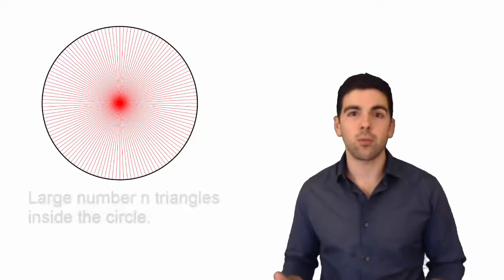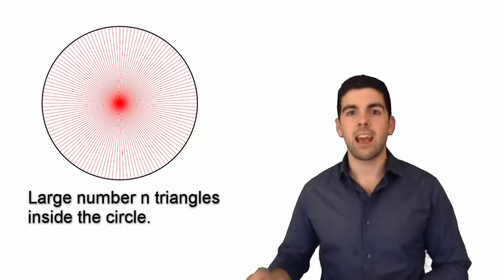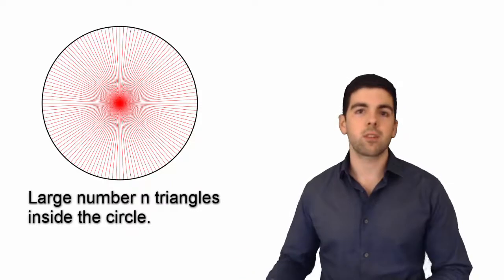He said, okay what if I have some ridiculously large number of triangles? It doesn't have to be eight or 64 or any number really. It can just be some large number and we'll call that number N. So N here just represents the number of triangles.